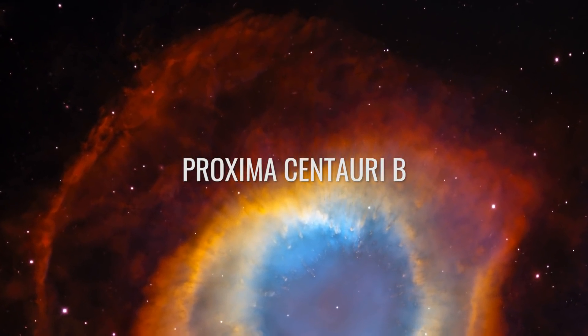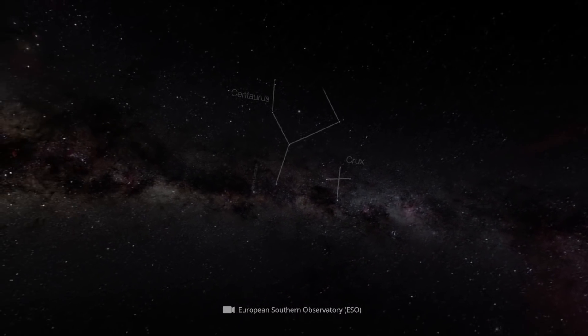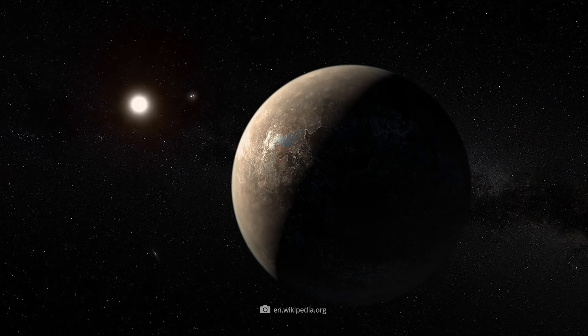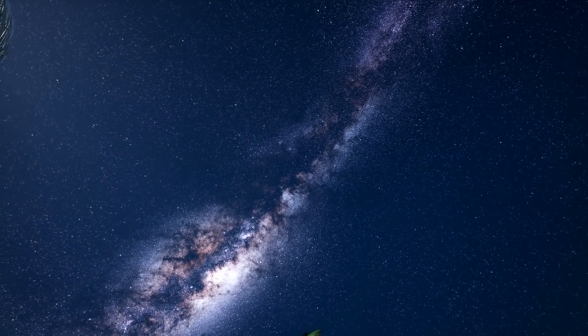Proxima Centauri b. Just 4.2 light-years from us in the constellation Centaurus, the exoplanet Proxima Centauri b is considered not only our closest Earth-like neighbor, but also a promising candidate for the discovery of life.